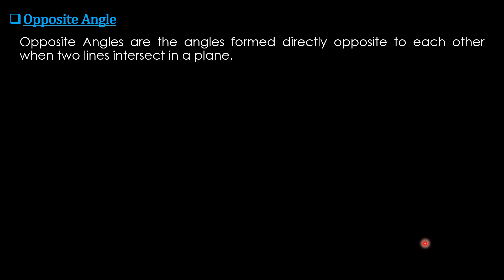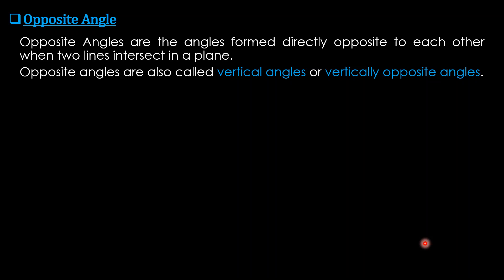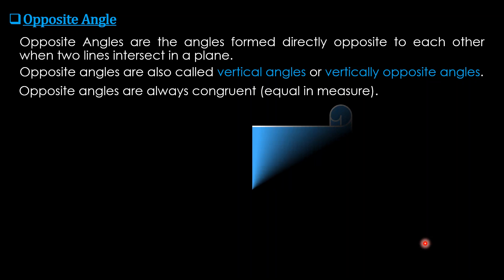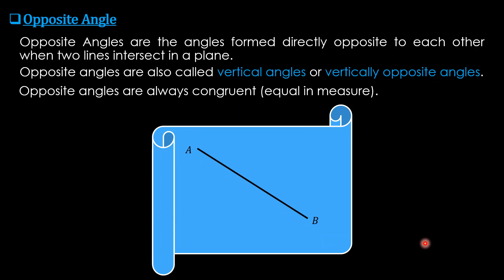Opposite angles are the angles formed directly opposite to each other when two lines intersect in a plane. They are also called vertical angles or vertically opposite angles, and they are always congruent — always equal in measurement. In the figure, lines AB and CD intersect; the two yellow-colored angles are opposite angles and are always equal, and the two other angles are also always equal — opposite or vertical angles are always the same.